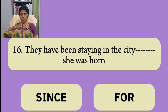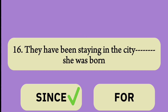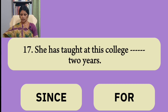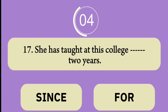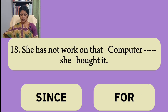Number sixteen: 'They have been staying in the city ___ she was born.' Number seventeen: 'She has taught at this college ___ two years.' Number eighteen: 'She has not worked on that computer ___ she bought it.'